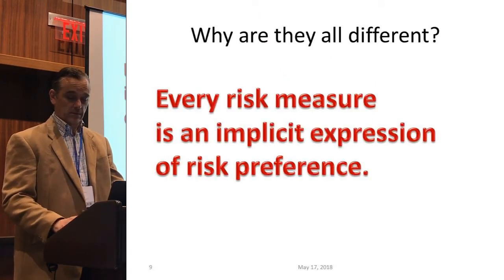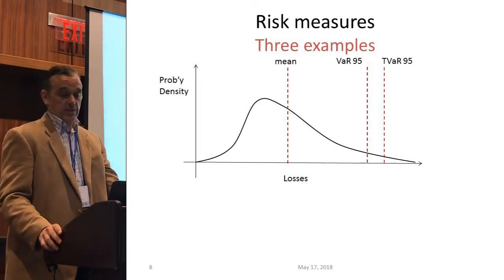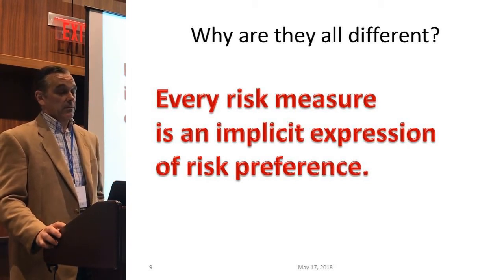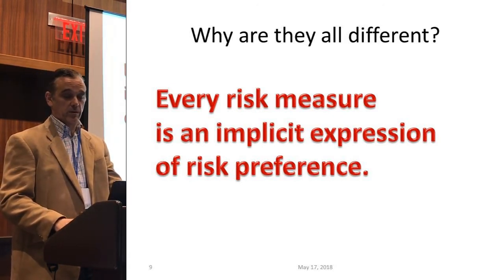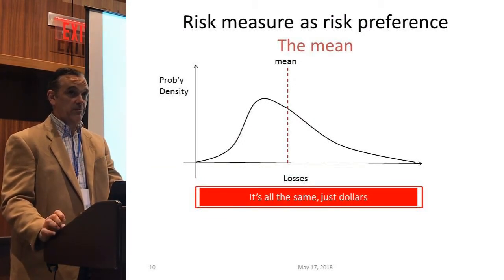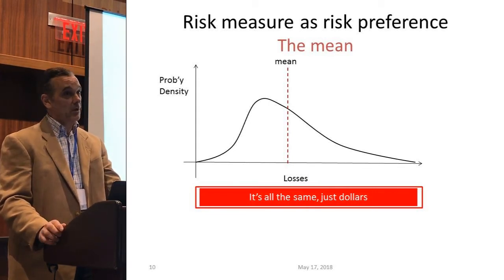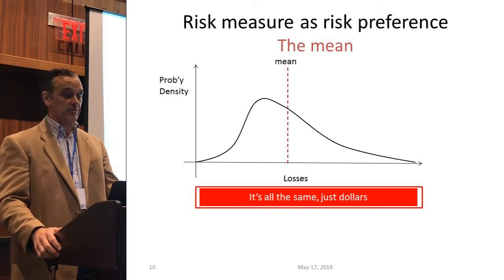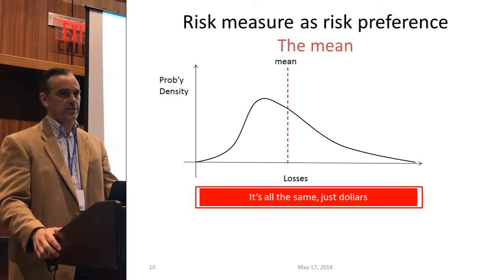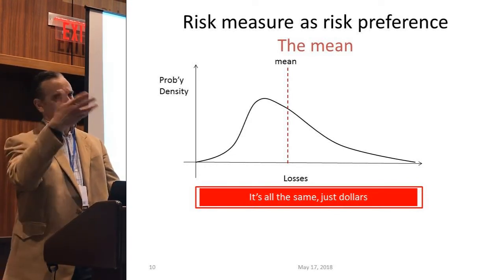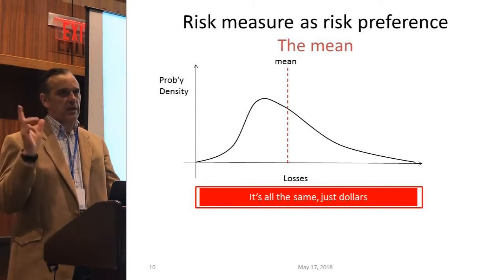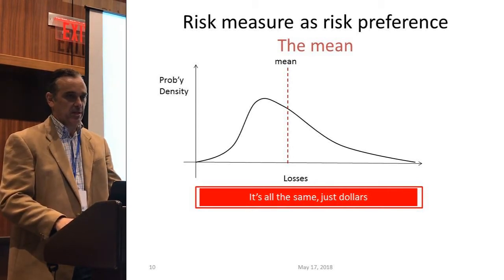The first example is the mean, then VAR and TVAR. Why are these three all different? You may not have even thought mean was a risk measure, but it sure enough is. Every risk measure is an implicit expression of risk preference — you're taking the distribution and transforming it in some different manner. Mean is 100% neutral with respect to amount and probability: it takes the weighted average of amounts and their probabilities. If you give me one distribution that's riskier than another, will the means be different? Maybe. Probably. Fairly clumsy, granted.